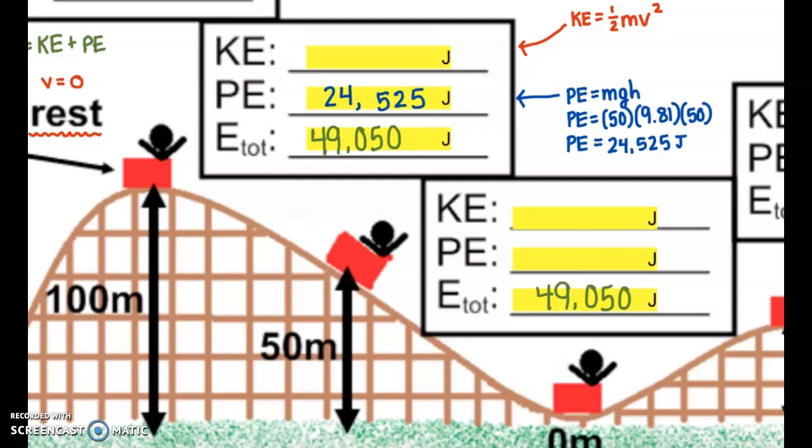I'd like to point out that another way of finding this, that's probably a little quicker, is to notice that we are at half of the height. We went from 100 meters to 50 meters. Since potential energy equals mgh, when you half the height, you simply half the potential energy.